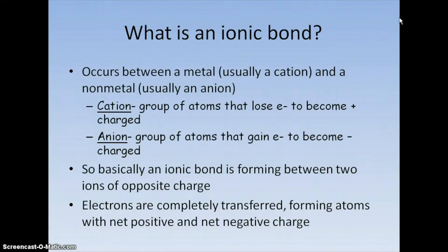In ionic bonding, electrons are going to be completely transferred, and they're going to have atoms that have a positive charge and a negative charge. And then again, the attraction between the positive and negative is what gives you the actual bond itself with ionic bonding.